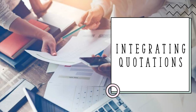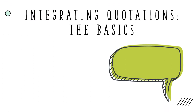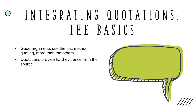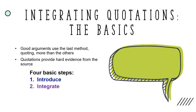Next, we'll talk about how to integrate quotations into your writing. Good argumentative essays use quoting more than the other methods, because quotations generally provide hard evidence that comes straight from the source itself, whereas summarizing and paraphrasing require you to put the information in your own words. There are four basic steps to integrate a quotation into your essay: introduce the quotation, integrate the quotation logically into your writing, explain the relevance of the quotation, and cite your source.